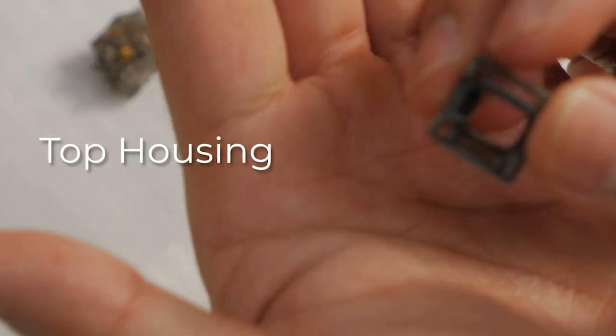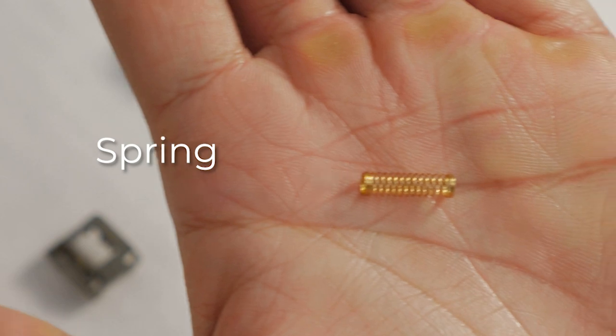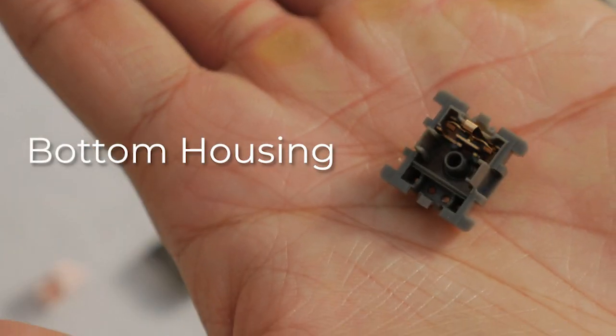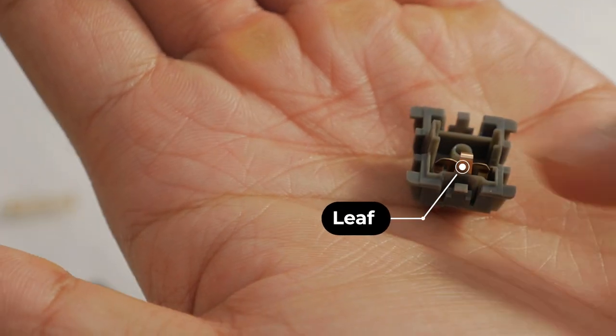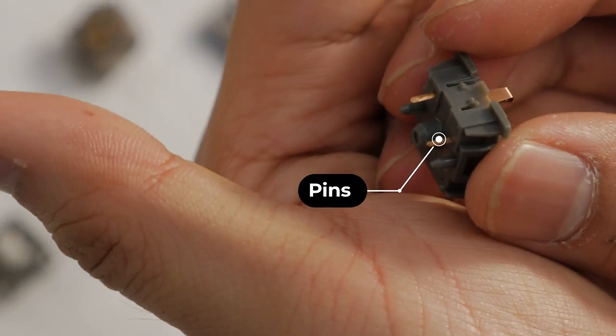This is the stem. This is the top housing. This is the spring. And this is the bottom housing. The copper piece in here is the leaf and that leaf is connected to the pins on the other side.